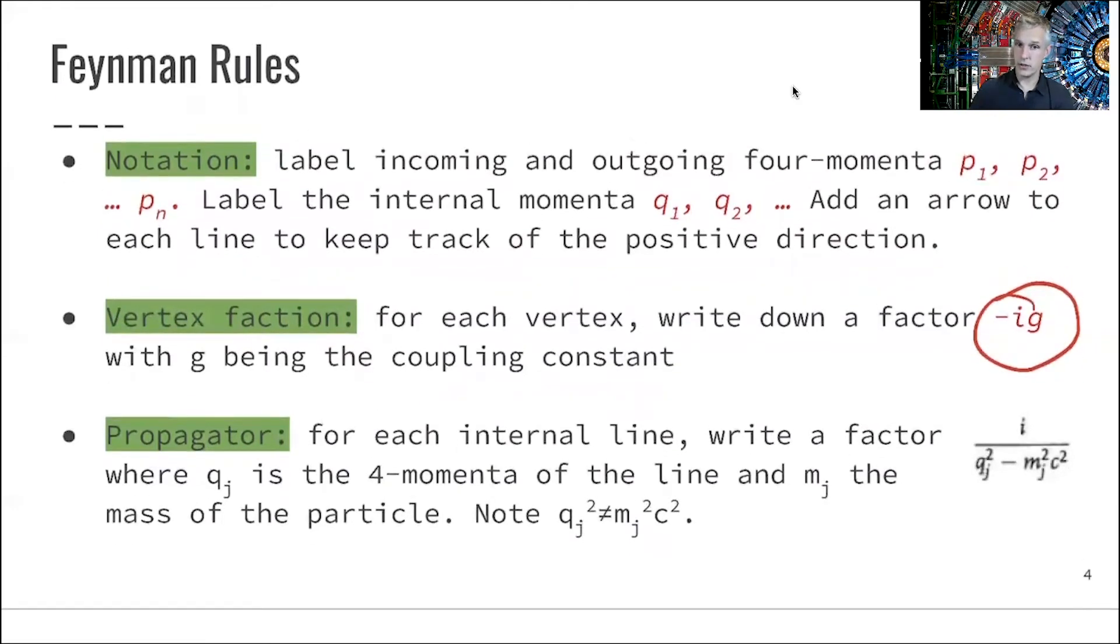Then we have a propagator. So for each internal line, the internal lines are also called propagator. We write down a factor i over Qj squared minus Mj squared c squared. Note that Qj squared doesn't have to be Mj squared c squared, meaning that the particle can be off shell, off mass shell. So you also see that there is a complication in the integral when you actually have those factors being the same.